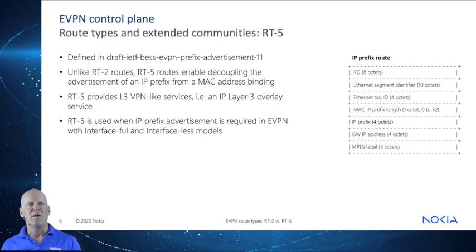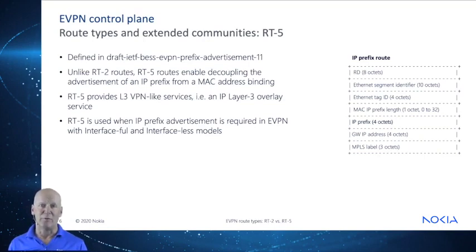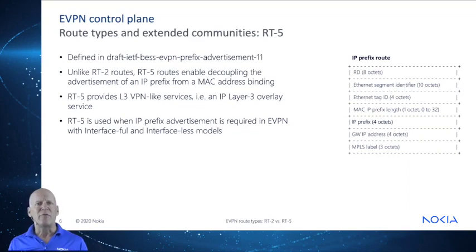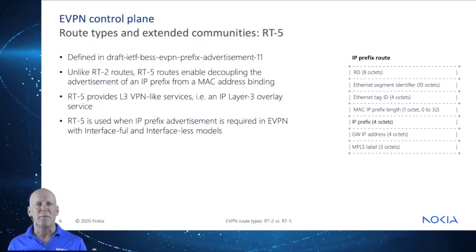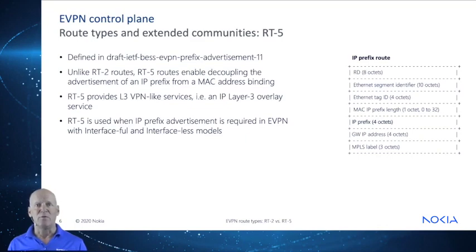The Type 5 route, or IP prefix route, is defined in draft-IETF-BESS-EVPN-prefix-advertisement version 11. It provides encoding of inter-subnet forwarding. In the control plane, EVPN Type 5 routes are used to advertise IP prefixes for inter-subnet connectivity across data centers. Data packets are sent as Layer 2 Ethernet frames encapsulated in a VXLAN header across the data centers. Unlike RT2 routes, RT5 routes decouple the advertisement of an IP prefix from the MAC address binding — which is very important. This allows RT5 to provide a Layer 3 VPN-like service, i.e., an IP Layer 3 overlay service, using a single address family.